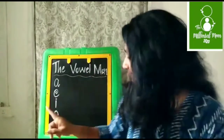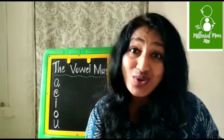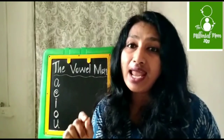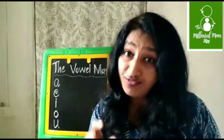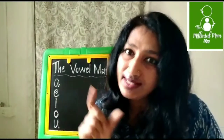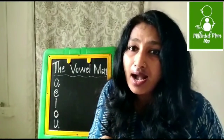Now U — U is the long sound. U for umbrella, U for under. U is the long sound and the short sound of U is a short uh sound.